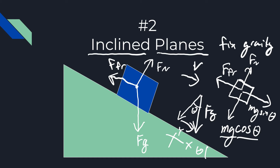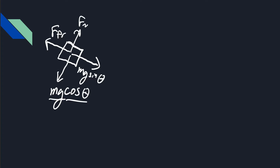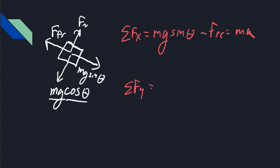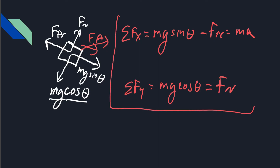When you set up the summation for this problem, once you've set up your fixed free body it's straightforward. In the horizontal direction — our new x along the plane — it's mg sine theta minus friction equals ma. In the y direction, mg cosine theta equals the normal force. These problems become more complicated if you're pushing up or down the plane, but if you know these basics you should be in very good shape.